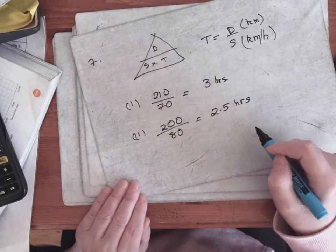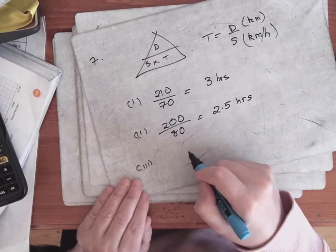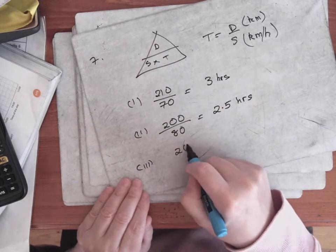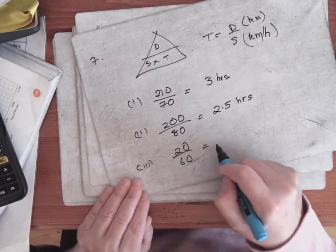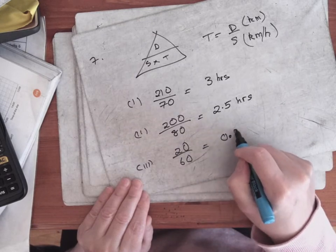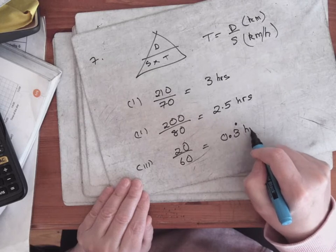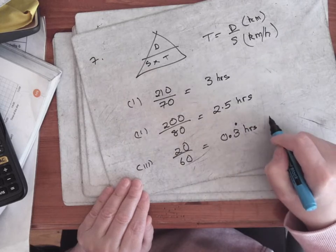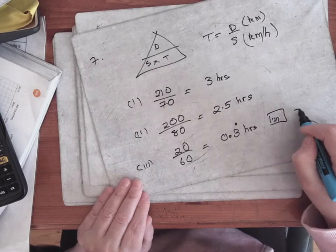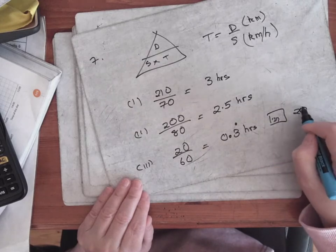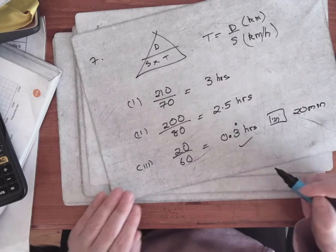Or two hours 30 minutes — either way it's correct. The last one is 20 kilometers at 60 kilometers per hour. Into the calculator that gives 0.3 recurring hours. If you press the button with all the commas on it, that will tell you it's 30 minutes, but 0.3 recurring hours or one third of an hour is also correct.